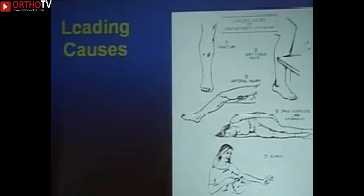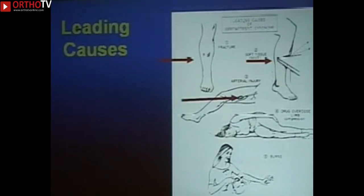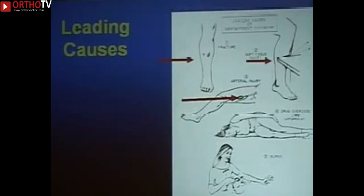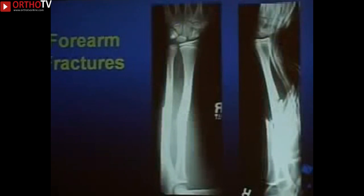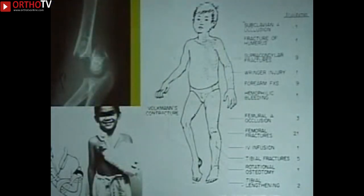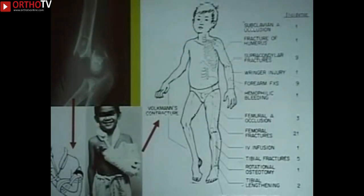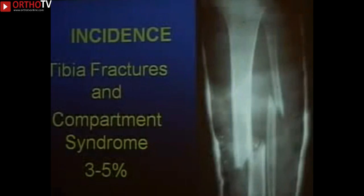Leading causes of compartment syndrome are fractures of the upper and lower extremity, contusions without fractures such as a kick to the shin playing soccer, arterial injuries, drug overdose or limb compression from earthquakes, and burns — very common in the plastic surgery realm. Forearm fractures produce it; supracondylar fractures produce it less so now because of the tendency not to use hyperflexion casting, which was associated with Volkmann's contracture in many kids. Other causes include tibia fractures and femoral fractures treated in traction.